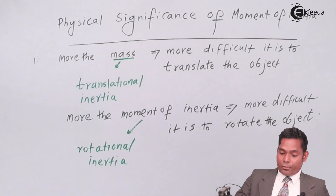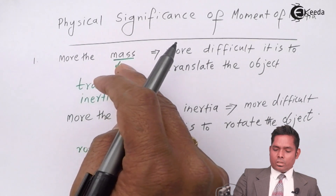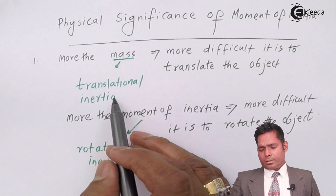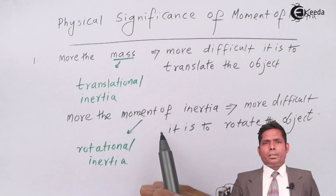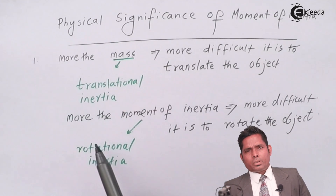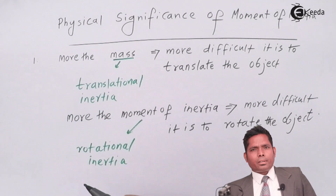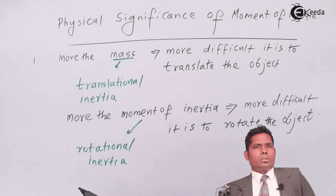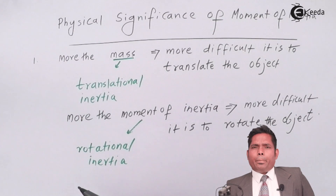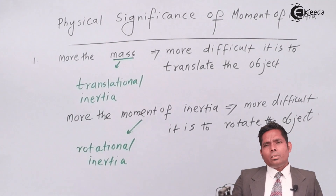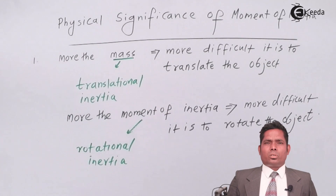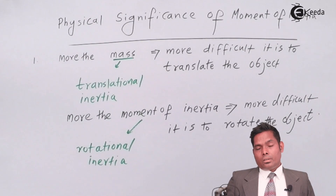For the same object, translational inertia is constant for a given mass, but rotational inertia — that is, moment of inertia — will be different depending on the axis of rotation. For example, for a disc: the moment of inertia about an axis passing through its center and perpendicular to its plane is ½mr², where m is the mass of the disc and r is its radius. But about an axis passing through the center and lying in its own plane — that is, about a diameter — it will be ¼mr². So it is easier to rotate about the diameter axis.